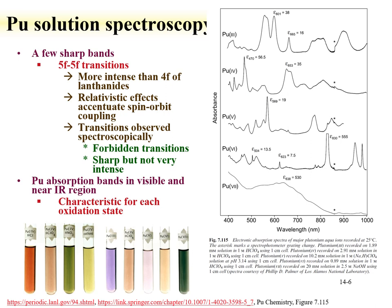Plutonium spectroscopy is shown here. We have a picture of different colored plutonium solutions — all tetravalent plutonium — showing different colors as a function of the ligand: HCl (chloride), perchlorate, nitrate, and plutonium colloid. There are also different colors as a function of oxidation state: 3, 4, 5, 6, and 7. This difference in color is evidenced by the absorbance spectra of plutonium in perchloric acid for plutonium-3, -4, -5, and -6.